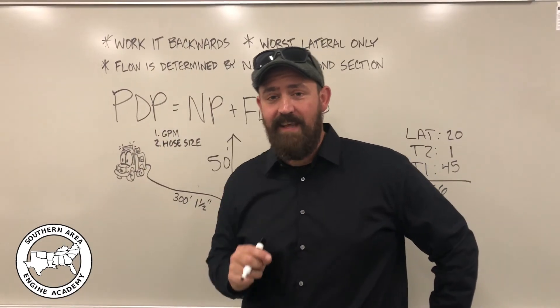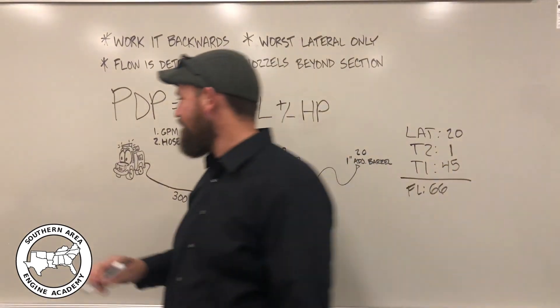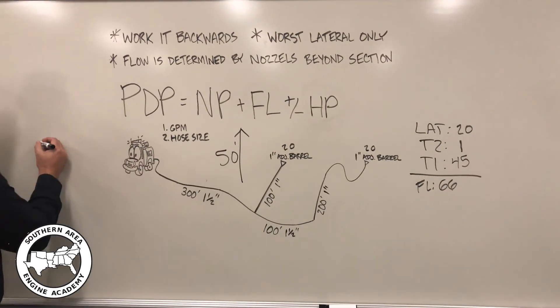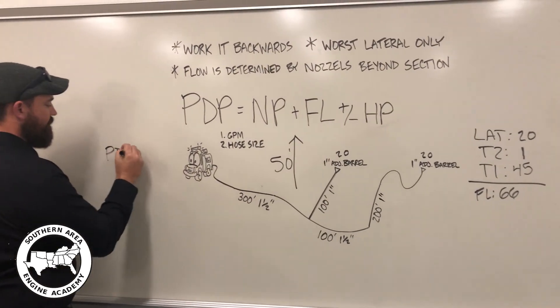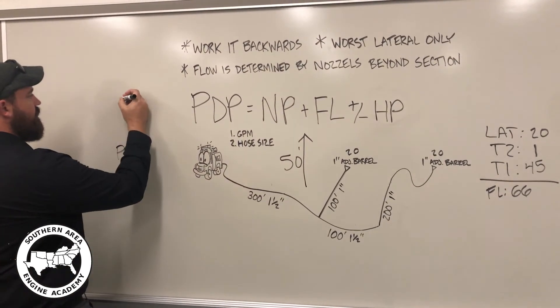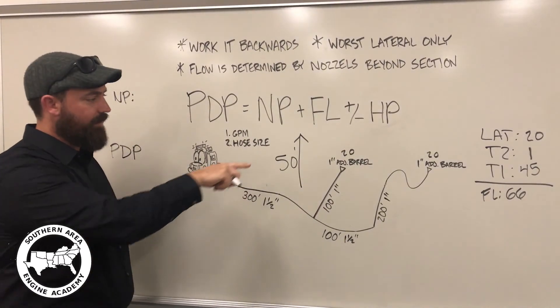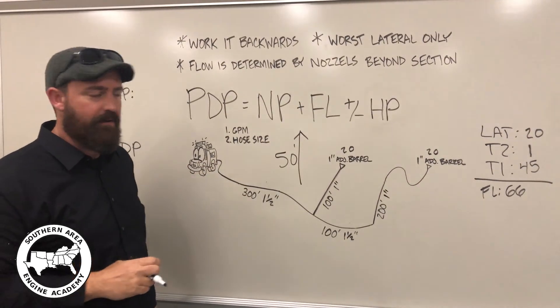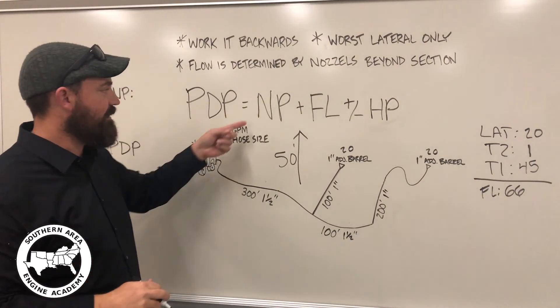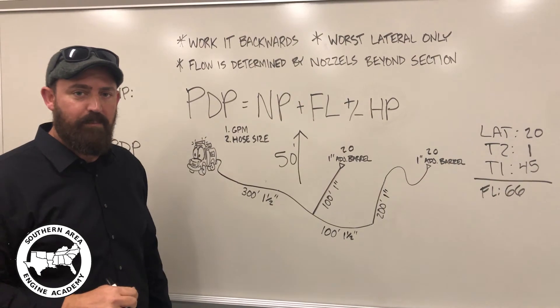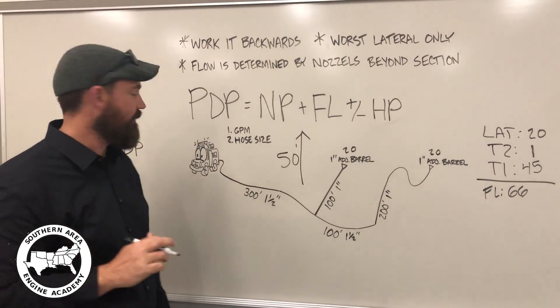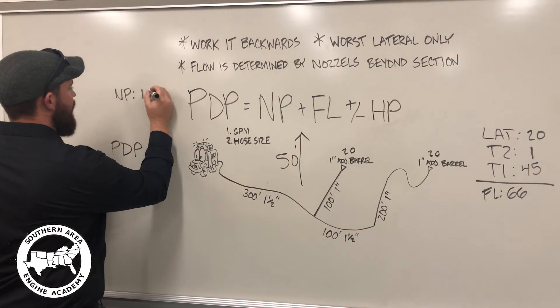Okay, so we have everything we need. Let's put it all together. So, we're looking for our pump discharge pressure. We determined here, we've got both these nozzles are one-inch adjustable barrels. Looking in the IRPG, the nozzle pressure for the adjustable barrel is 100 pounds. So, that's 100 psi, we need to go there. Now, you may ask if these nozzle pressures are different, which nozzle pressure do I put here? And it will be the nozzle pressure from whichever your highest demand lateral is. Use that one.